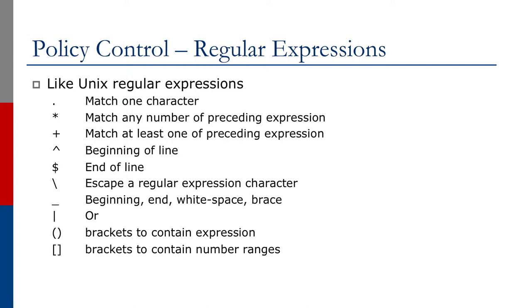Then you have an underscore which can match at the beginning or at the end or wherever there is white space or just where there is a brace. Then you have the pipe which is a way to use the logical OR. And then you have brackets to contain expressions that you can group against other different match characters. And then you have square brackets to contain number ranges.